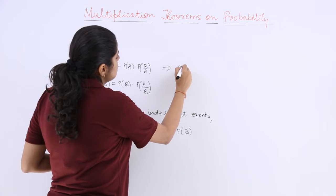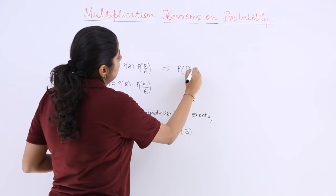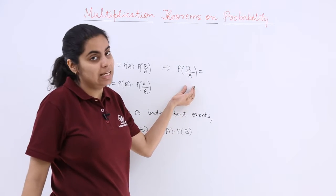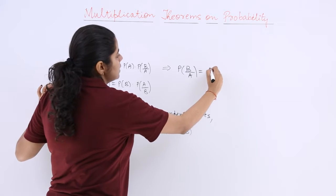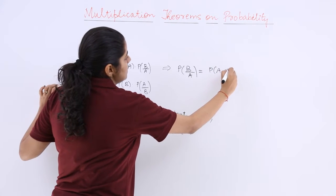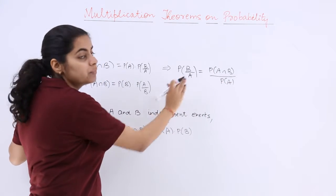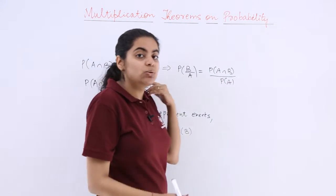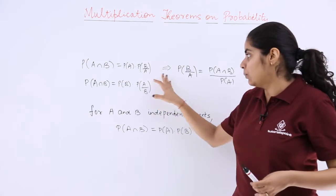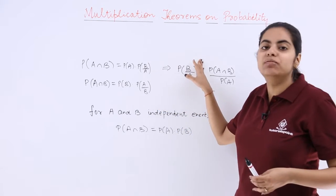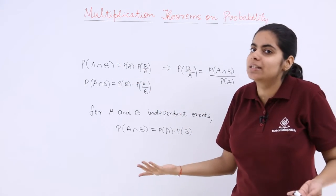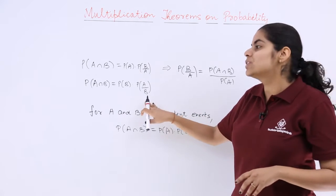from here you can always compute P of B over A, that means P of B when A has already occurred, that is P of A intersection B over P of A. And this is not a new thing, you have already studied this in the topic of conditional probability. So if I write the formula like this or like this, it doesn't matter, the same applies to the second formula.